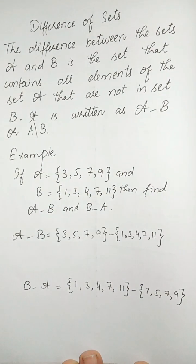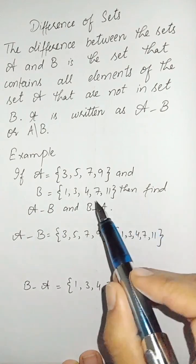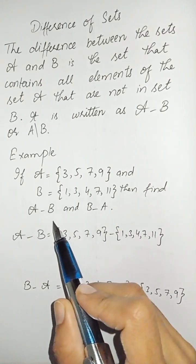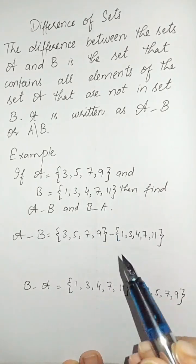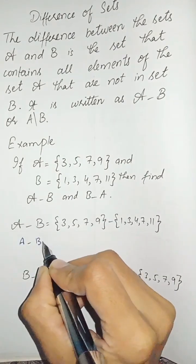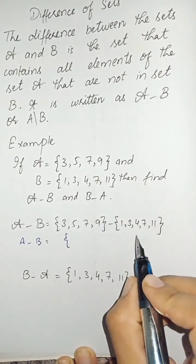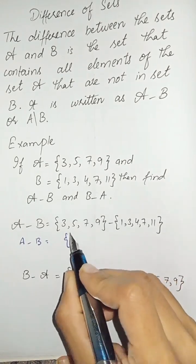We can understand it with an example. If A has these elements and B has these elements, then find A difference B and B difference A. A-B is those elements which are present in A but not in B.